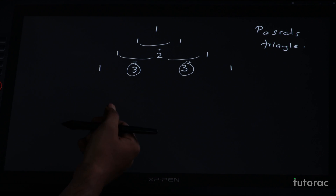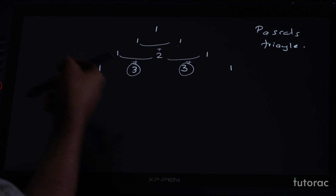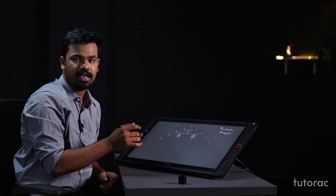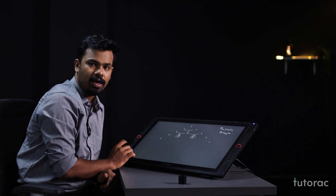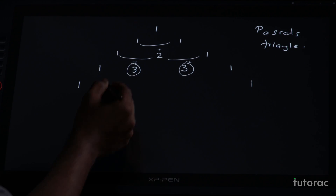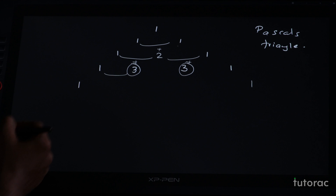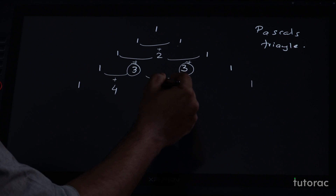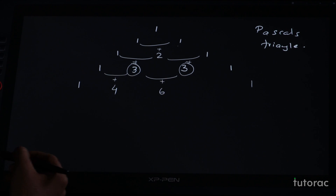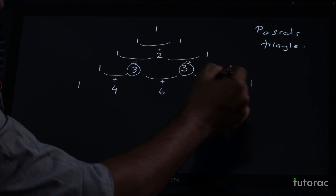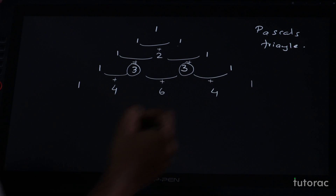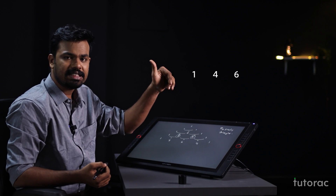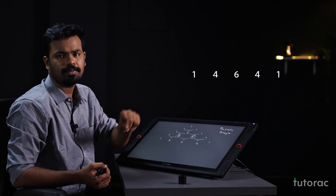So if I am writing the next level in this Pascal's triangle, the endpoints will be 1. The beginning and the end will be 1. And what about the numbers in between? 1 and 3 gets added together, gives you 4. 3 and 3 gets added together, gives you 6. 3 and 1 gets added together and gives you 4. So you are getting the numbers 1, 4, 6, 4, and 1.